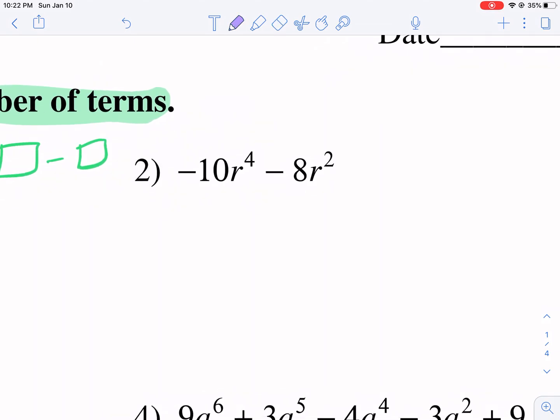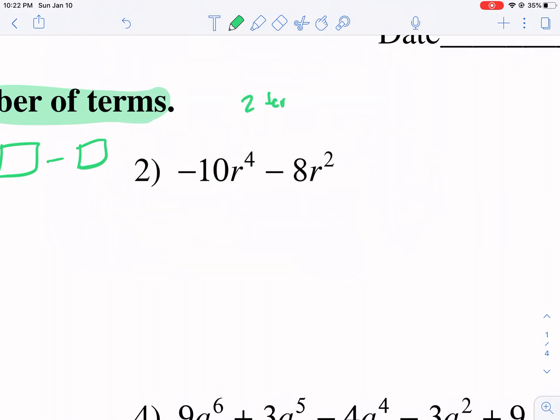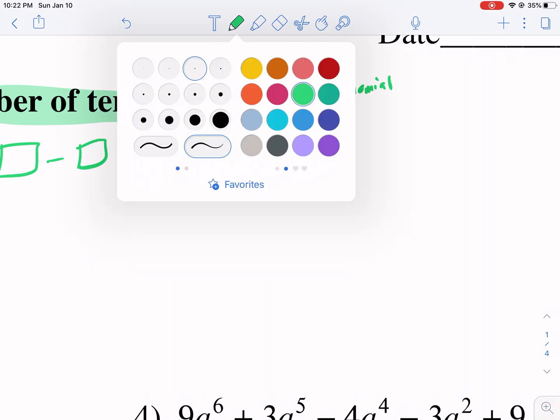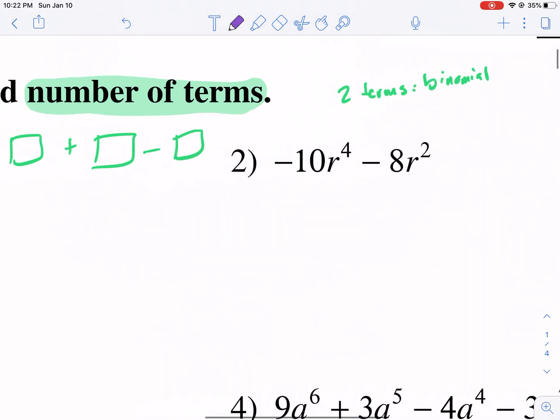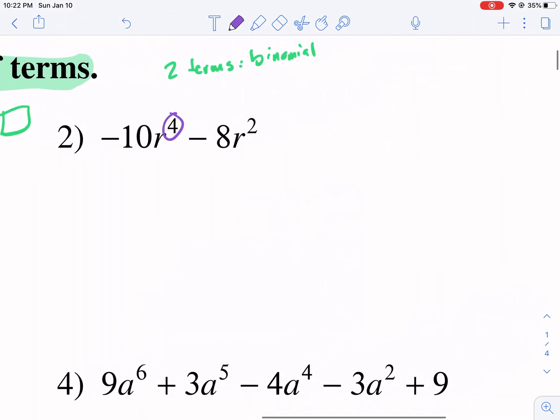The main point is there are two terms here because it's separated by addition or subtraction. So this is two terms, and there's a special name for that. It is a binomial. Bi meaning two, nomial talking about the number of terms.